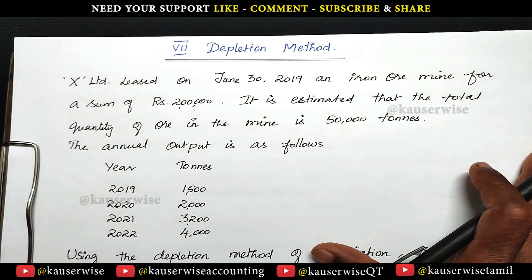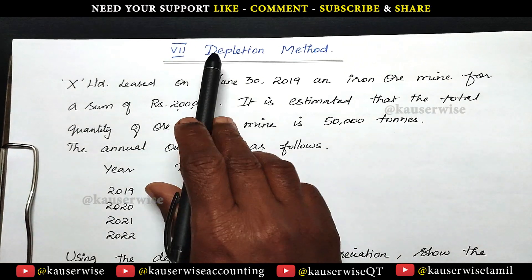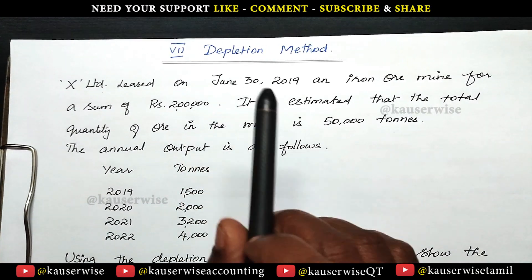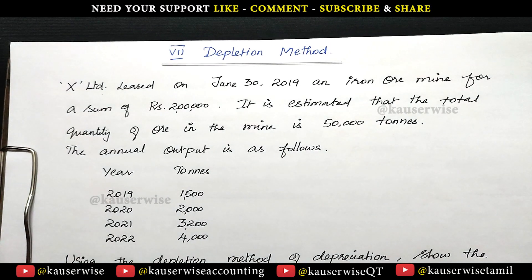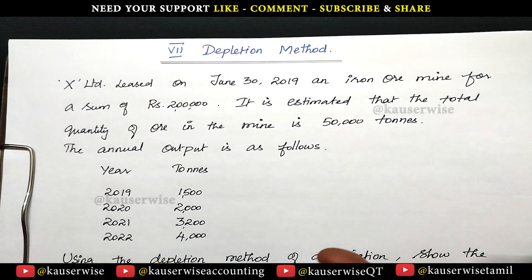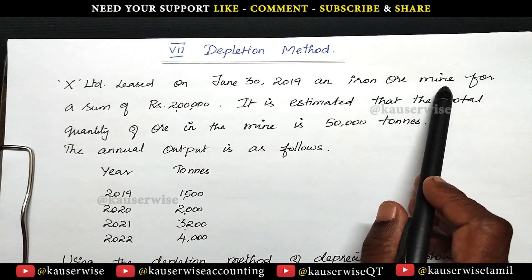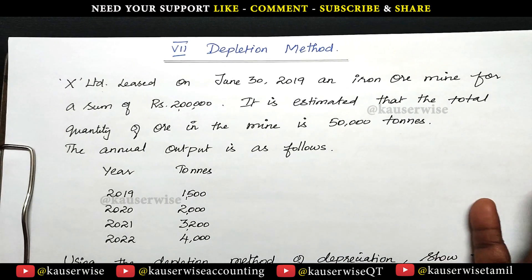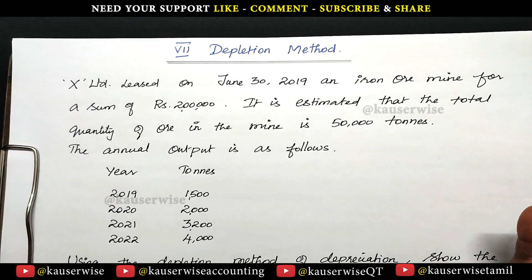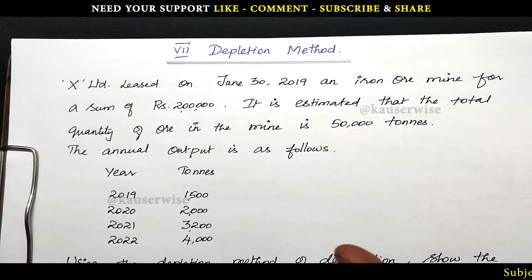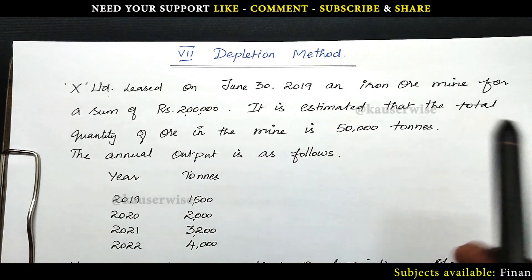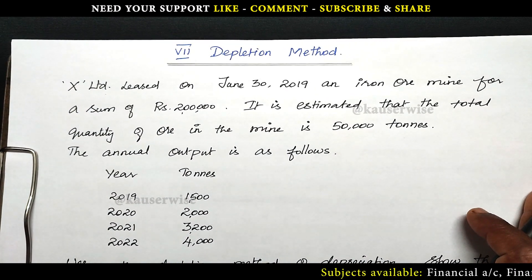Before we see the problem, let us try to understand what is depletion method. This method is specially applicable for natural assets, otherwise called as wasting assets. For example, iron ore mine, quarries, oil well — these are the natural assets. For these kind of assets, depreciation is calculated based on depletion method. Now let's see the problem for better understanding.